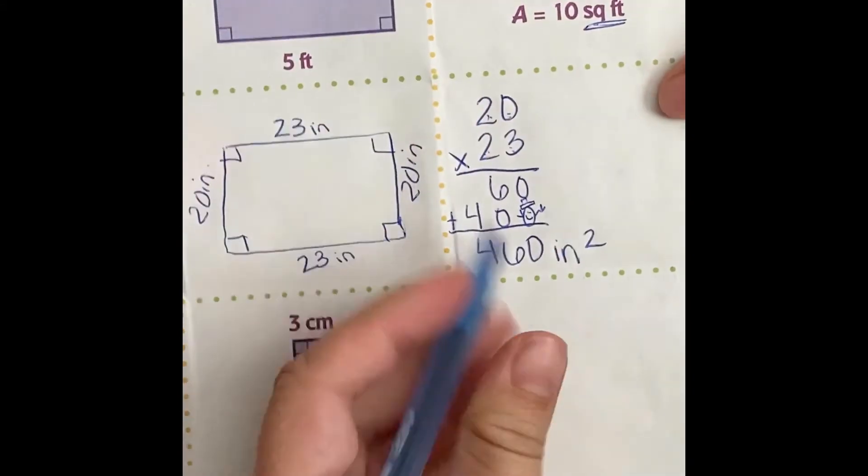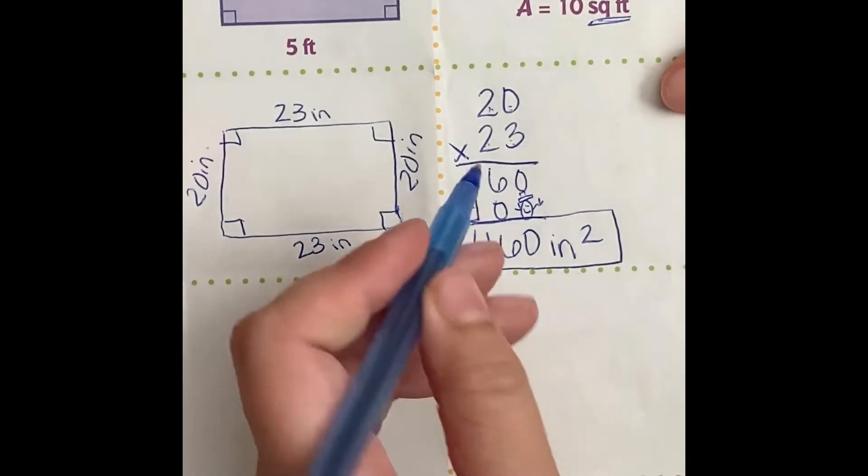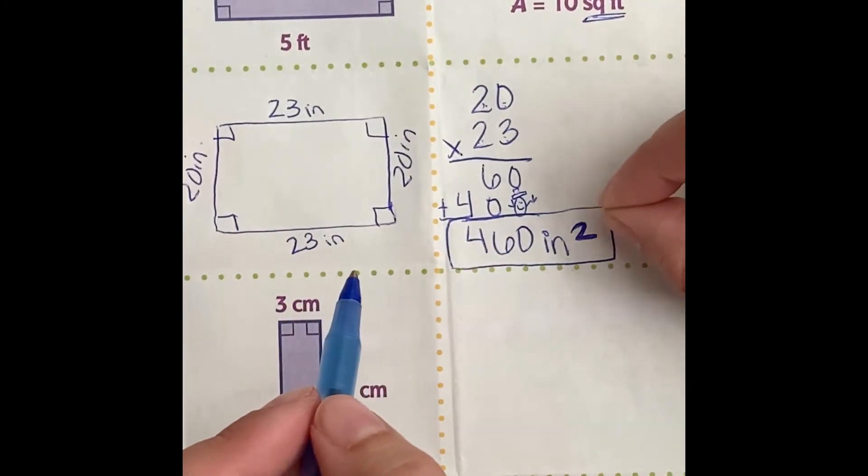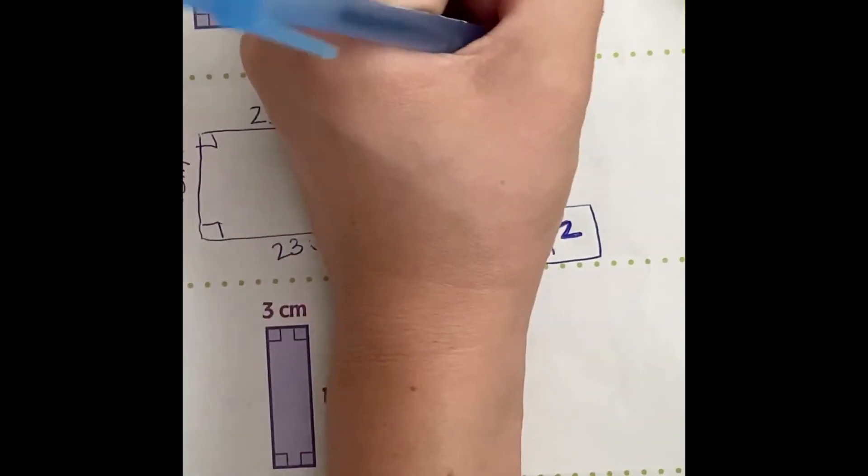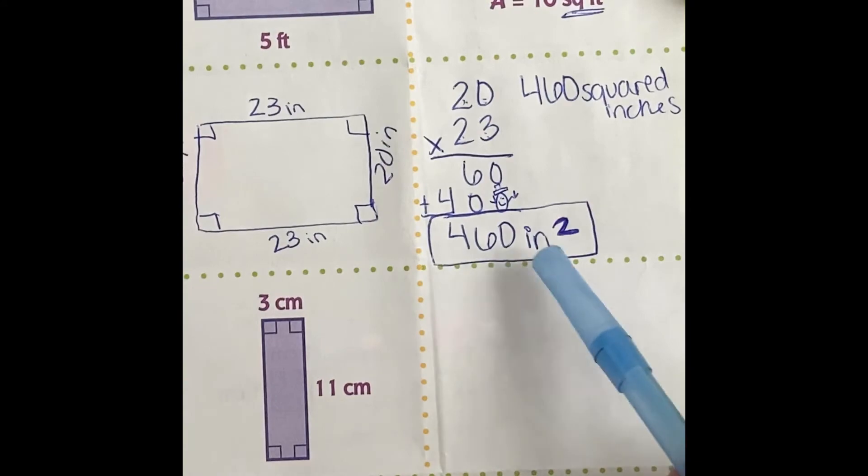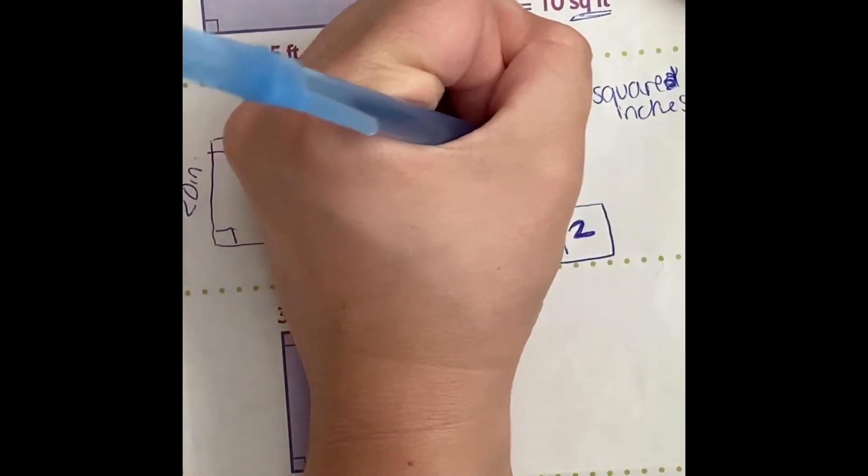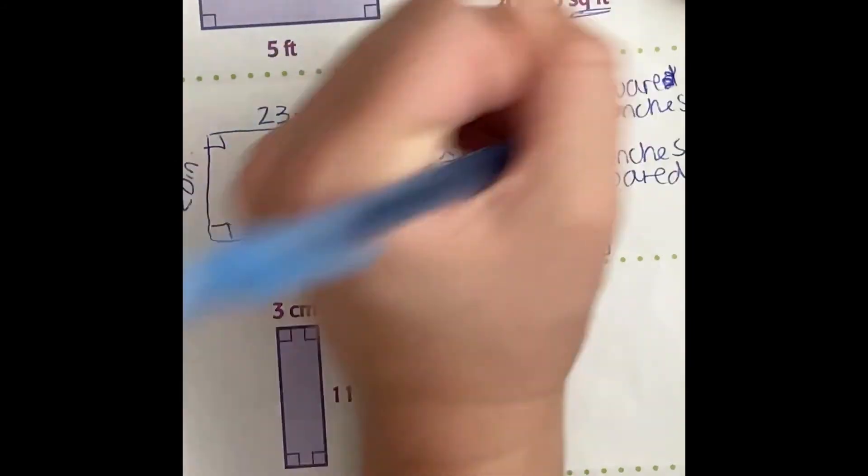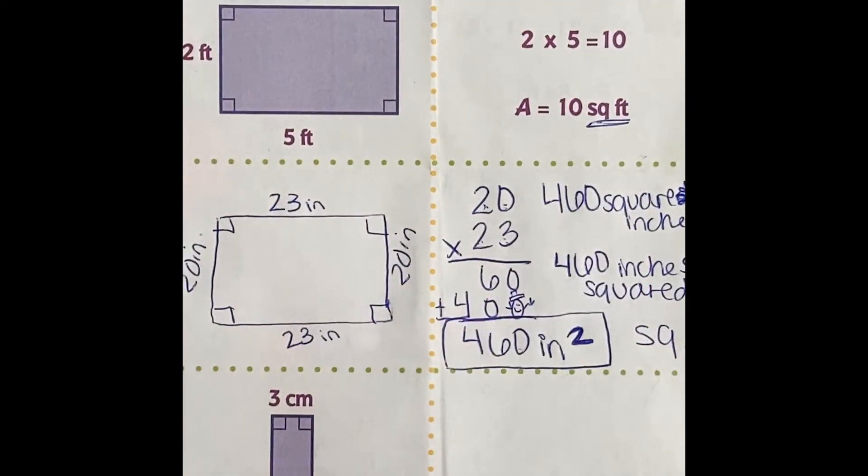Inches squared. So remember in our video, I talked about how this means squared and we learned this at the beginning of the year. If you put a little 2 in the corner, really what it means is the squared units. So there's a couple ways to write this: you can write 460 inches squared, you could do 460 square inches, 460 inches squared written out, whatever way you want to do. You could also just write sq for squared, it's up to you.